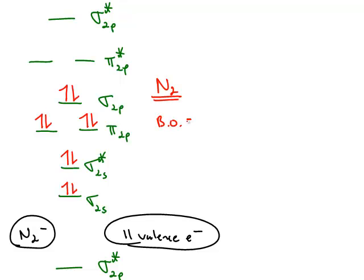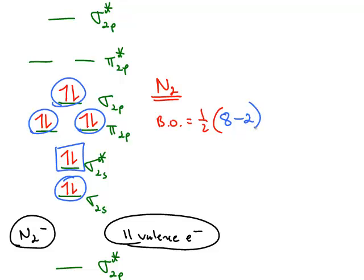We can calculate the bond order by calculating one-half the number of electrons in bonding molecular orbitals. So we can count up 2, 4, 6, 8 electrons are in bonding MOs, and only 2 electrons are in anti-bonding MOs. So one-half of 8 minus 2, one-half of 6 gives you a bond order of 3.